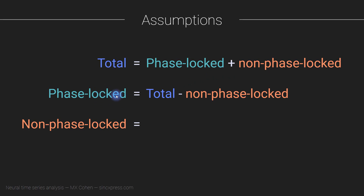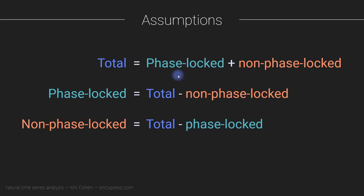Once we make this definition, we can define the phase-locked part of the signal — here's where we get into the really intense PhD-level mathematics — we define the phase-locked part as the total minus the non-phase-locked part, and we define the non-phase-locked part as the total minus the phase-locked part. If you're a little disappointed at the lack of rigorous advanced mathematics, I apologize — it was just a stupid joke. Anyway, these are the assumptions. How do they get translated into data?